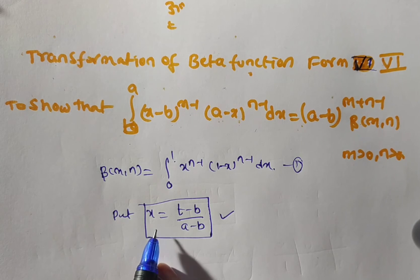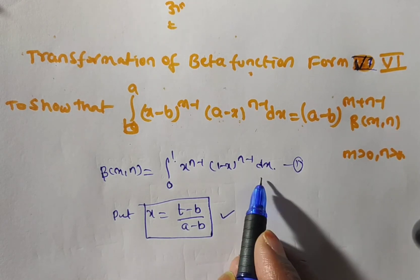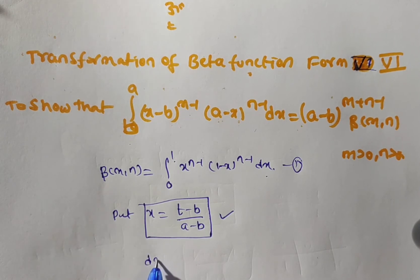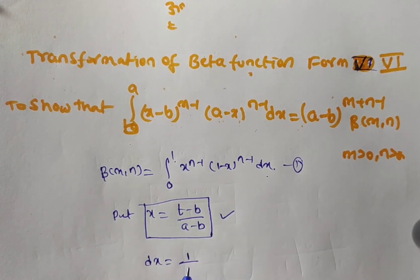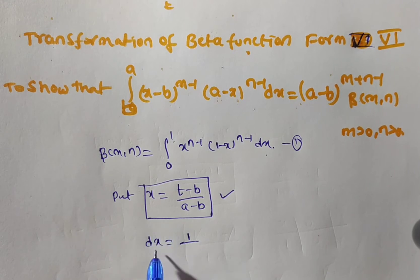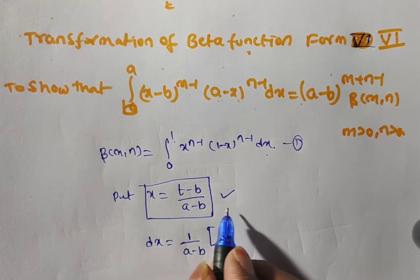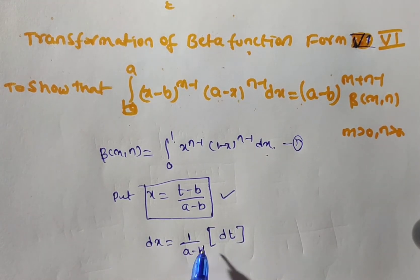Now we are changing x terms into t terms, so we need to find dx as well as the limits. To find dx, differentiate both sides of x equal to (t minus b) by (a minus b). Then on the left side you have dx, and on the right side you have 1 by (a minus b) times dt. This is the dx value.